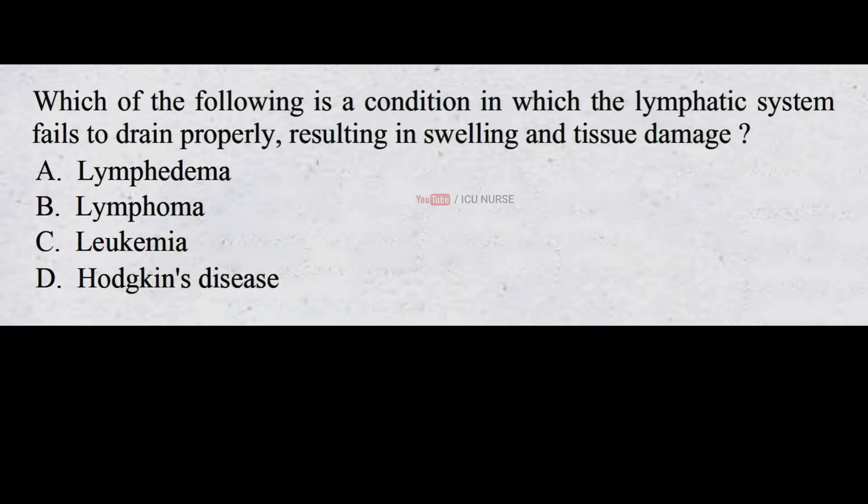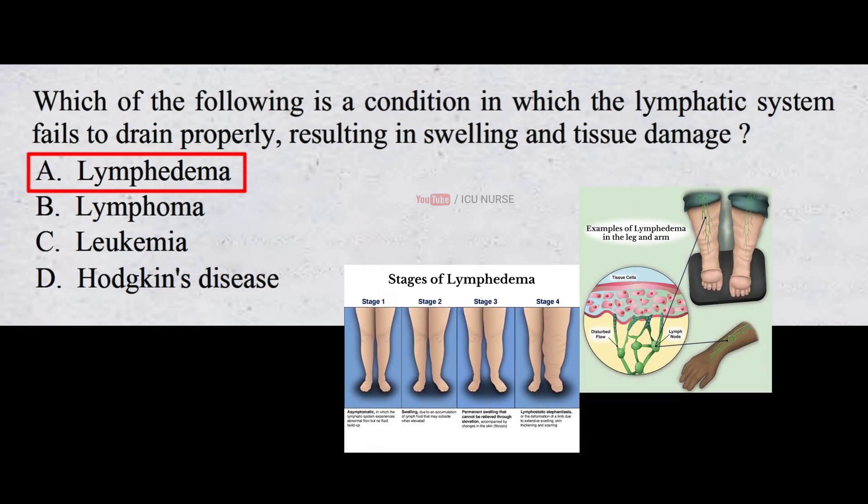Which of the following is a condition in which the lymphatic system fails to drain properly, resulting in swelling and tissue damage? A. Lymphedema B. Lymphoma C. Leukemia D. Hodgkin's disease. The correct answer is A. Lymphedema. Lymphedema occurs when the lymph vessels are not able to adequately drain lymph fluid, usually from an arm or leg. The most common causes include cancer — if cancer cells block lymphatic vessels, lymphedema may result.